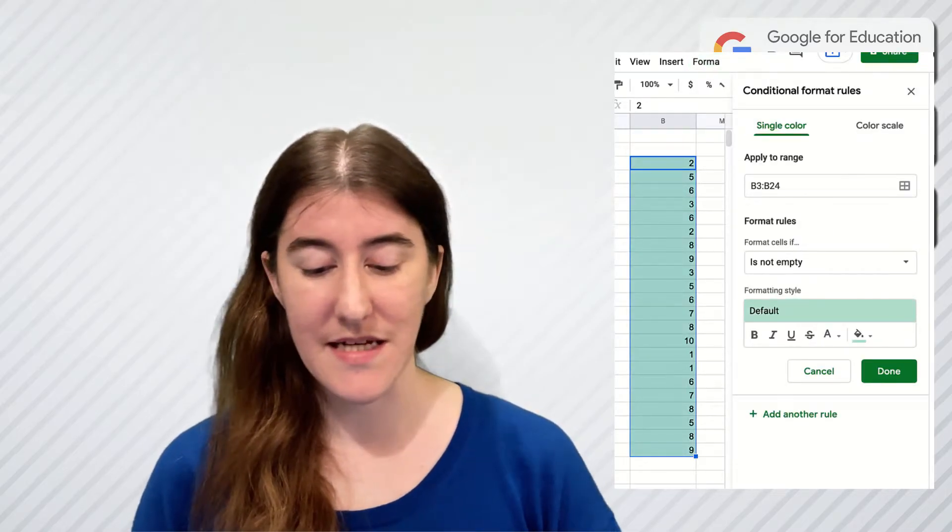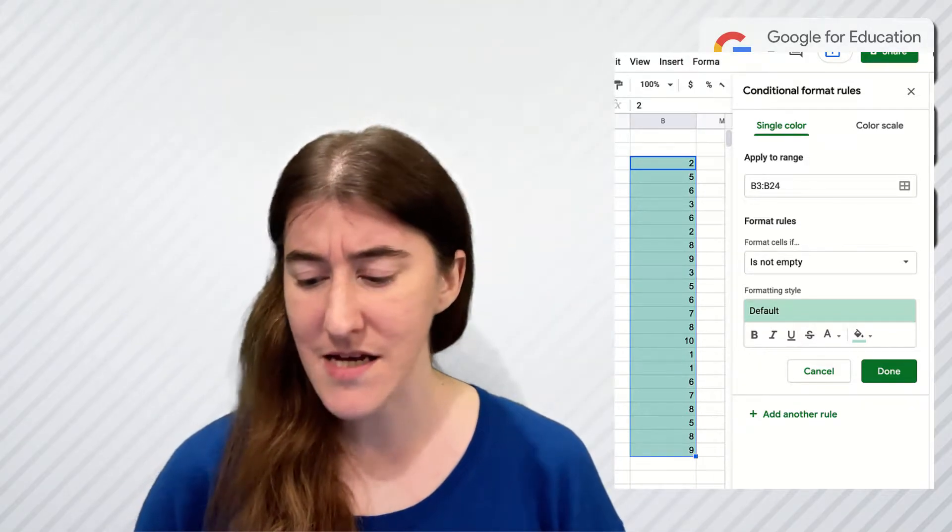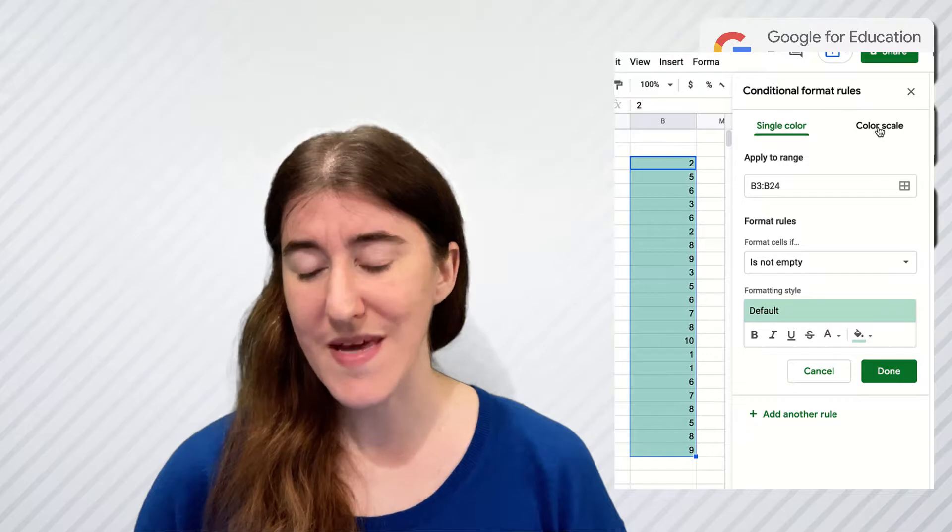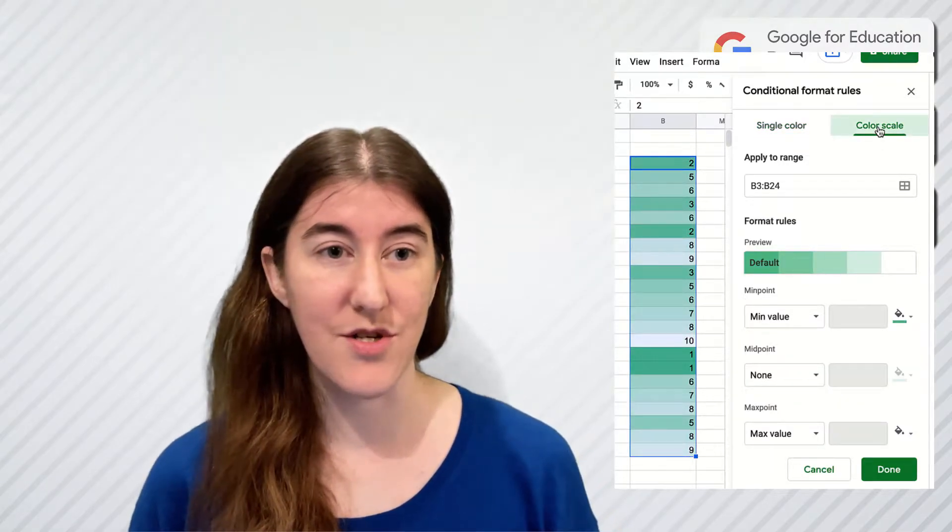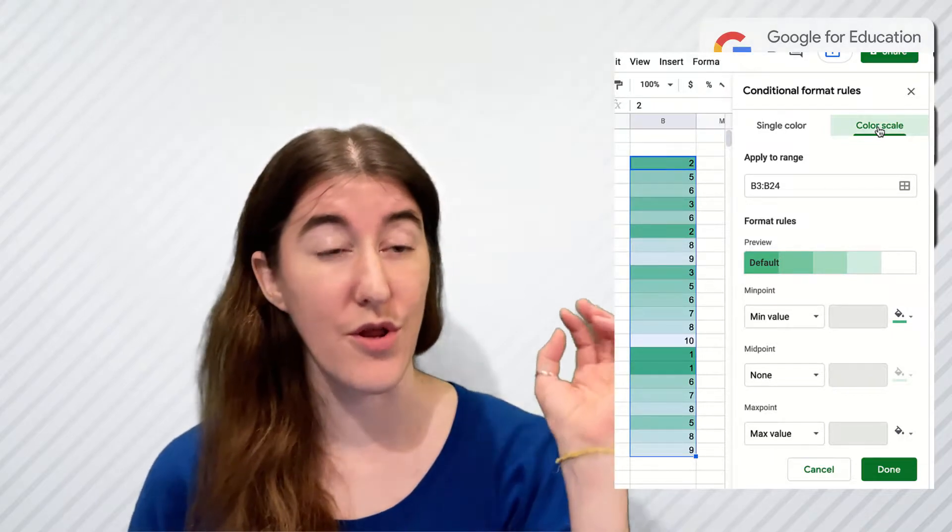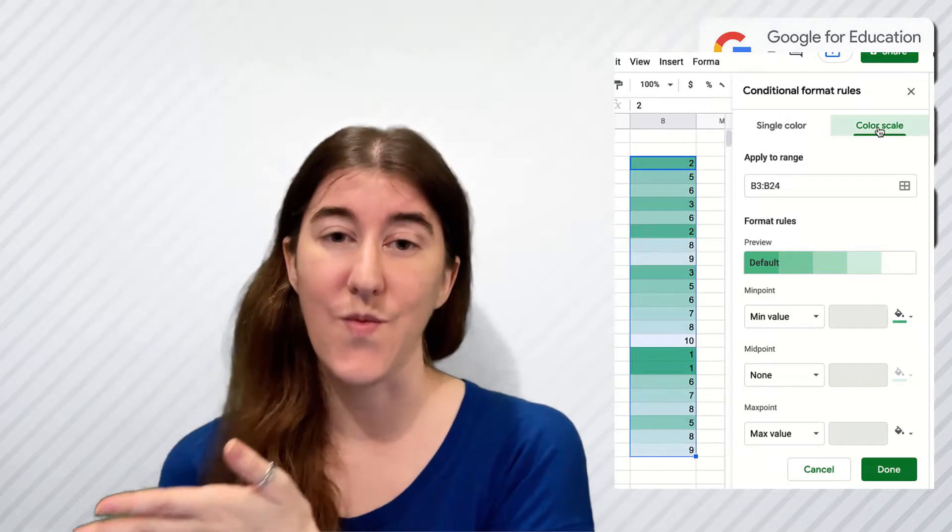Now it automatically does the default to the single color scale and the green box, go ahead change that to be color scale and now it will adjust to the default color scale which goes your lowest score is dark green, your highest score is white.